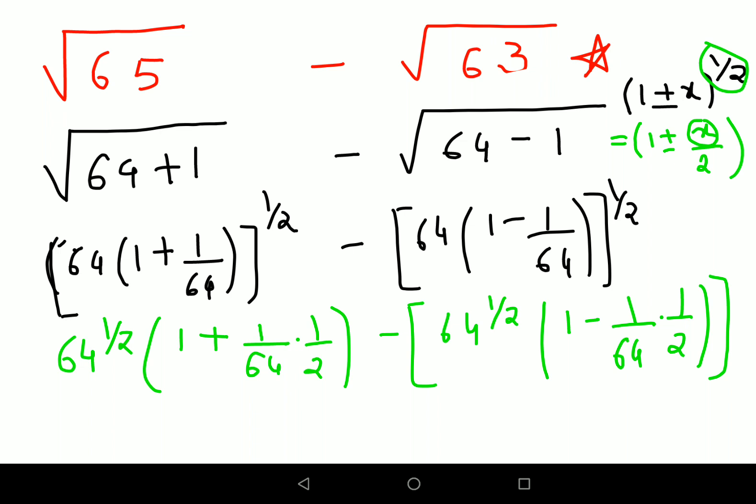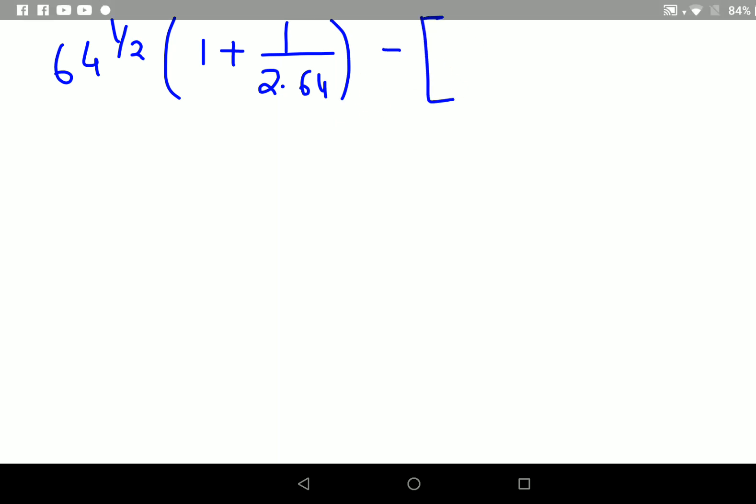I hope this is very clear to everyone. Let me write it this way: I have 64 raised to 1/2, and then 1 plus 1/(2×64). Then I have a minus sign, so I'll put the other things in brackets: 64 raised to 1/2, then bracket (1 minus 1/(2×64)).